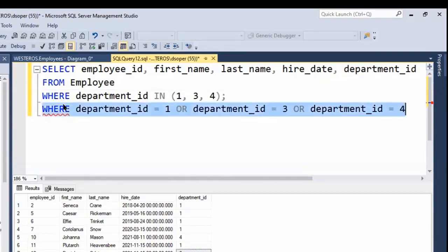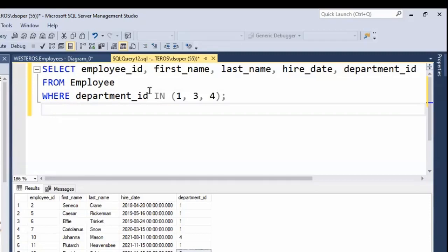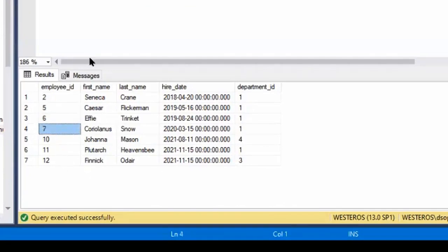And for now, just to test this out, I'll clear that out. And you'll see, currently we know that the correct answer is employees 2, 5, 6, 7, 10, 11, and 12.